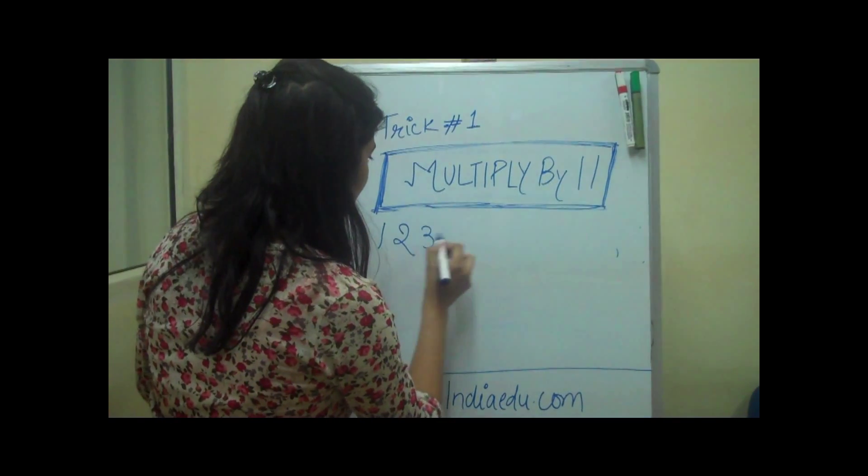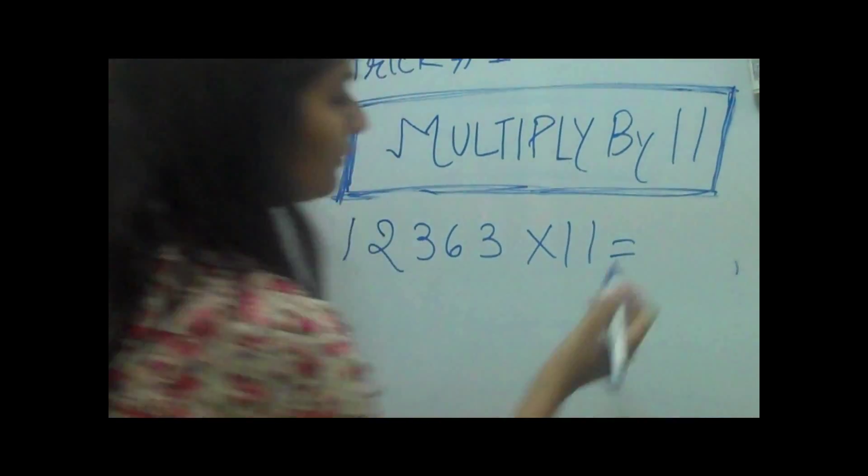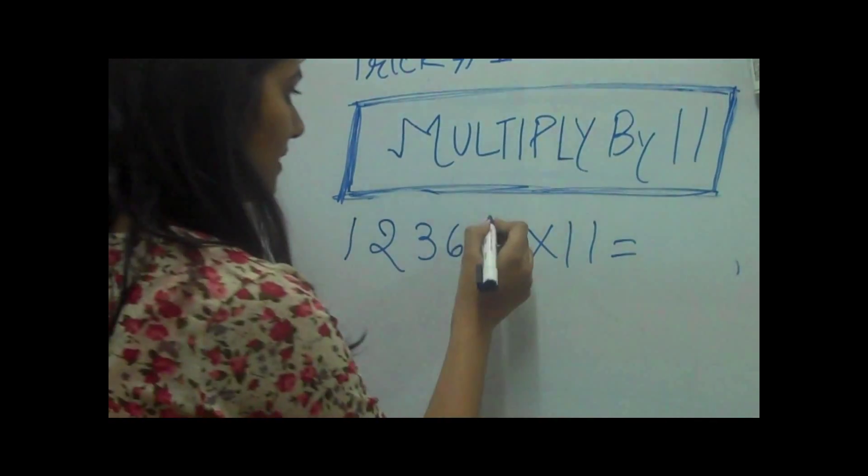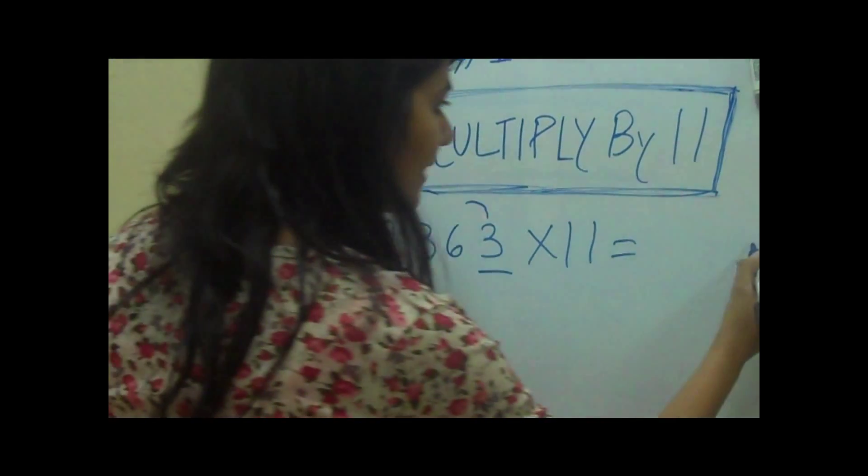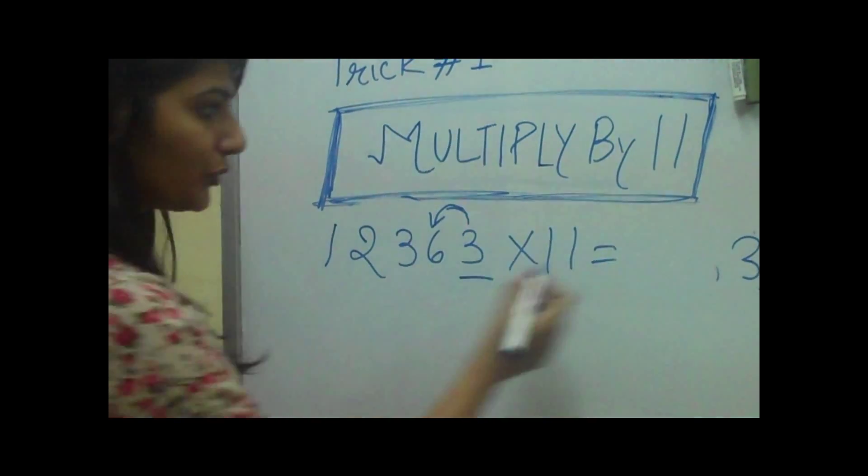12363 times 11. We'll solve it in the first step. First we'll put the first number as it is. Then we'll add the last two numbers, 6 plus 3 is 9.